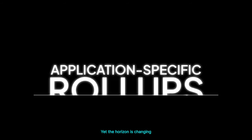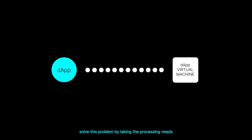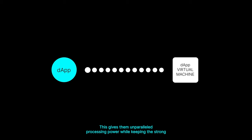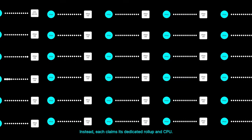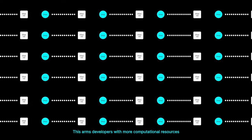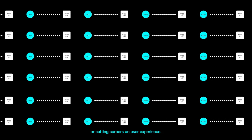The horizon is changing with the rise of application-specific roll-ups. Application-specific roll-ups like Cartesi roll-ups solve this problem by taking the processing needs of each dApp to its own dedicated optimistic roll-up chain. This gives them unparalleled processing power while keeping the strong security of the Ethereum blockchain. In this new paradigm, dApps no longer wrestle for shared resources — each claims its dedicated roll-up and CPU, arming developers with more computational resources and lifting the weight of optimizing gas costs or cutting corners on user experience.